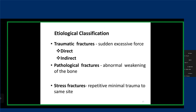Traumatic fractures result from sudden excessive force, which can be direct or indirect. In this case, it's the excessiveness of the force that causes the fracture — otherwise the bone is healthy. Pathological fractures result from an abnormally weak bone, where the force is not excessive but results in a fracture only because the bone is already weak. Stress fractures result from repetitive minimal trauma to the same site — it's the repetition that causes the fracture.